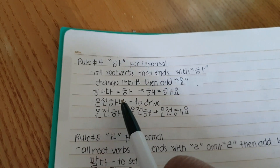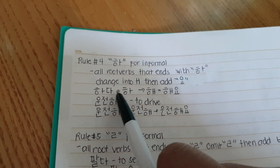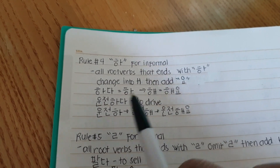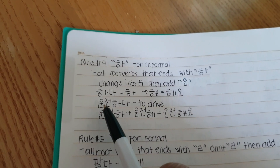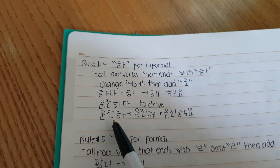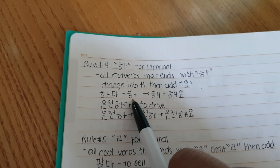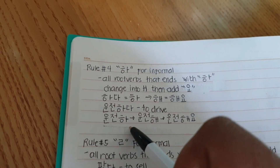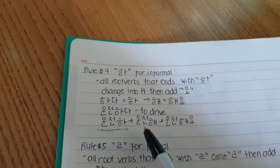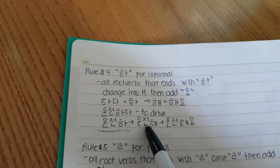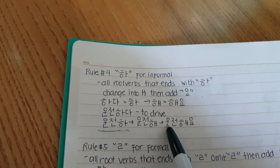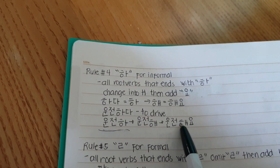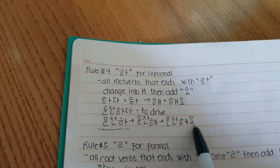For example, 'unjonhada' — this is a 'hada' verb meaning 'to drive'. The root verb is 'unjonhada'; we just remove the 'da', so the root verb is 'unjonha'. Then the present informal form would be 'unjonhaeyo'.